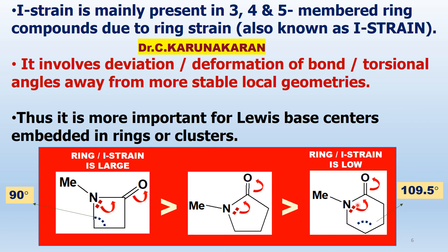This decreases the basicity. I-strain decreases the basicity due to ring size effect. I-strain involves deviation and deformation of bond angle. The normal bond angle is 109.5 degrees with sp3 hybridization. It deviates from the more stable geometries. It involves deviation and deformation of bond torsional angles away from more stable geometries. Thus, it is more important for Lewis base centers embedded in rings or clusters.